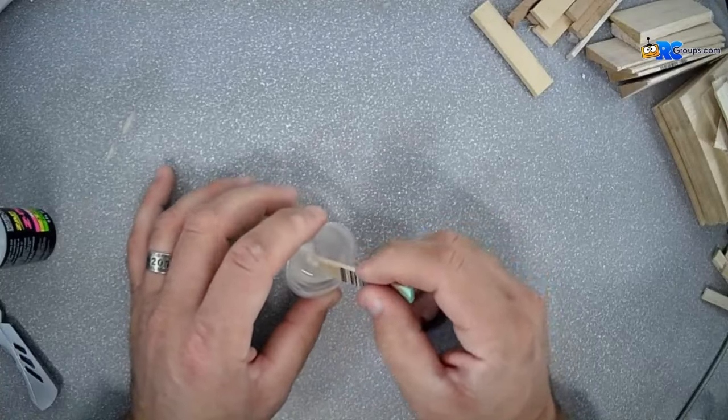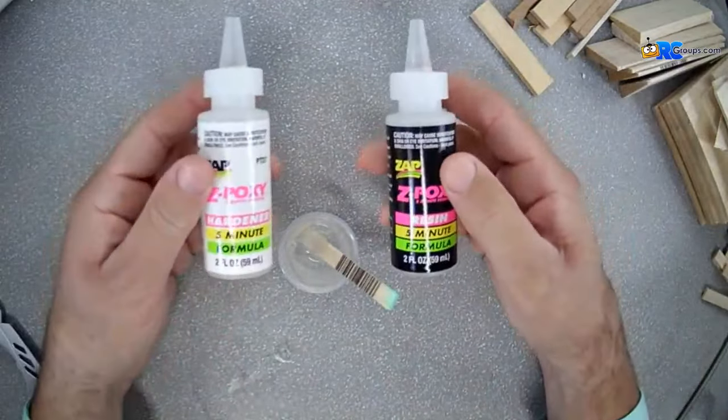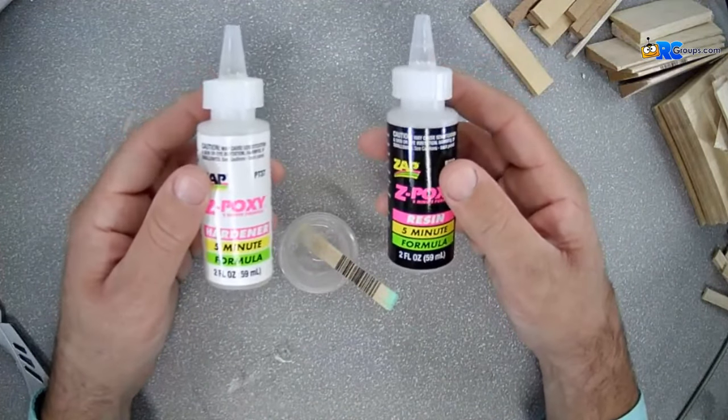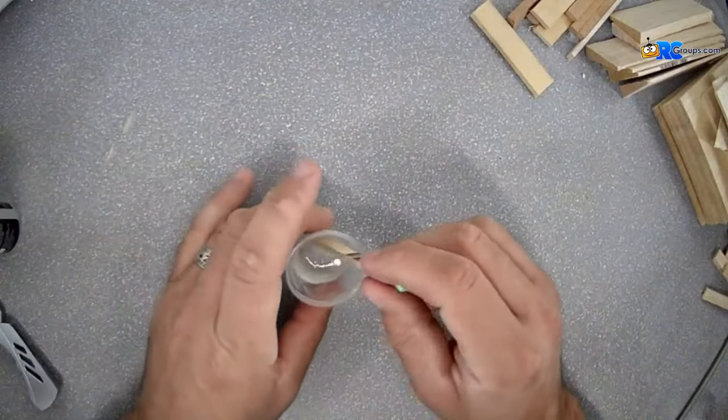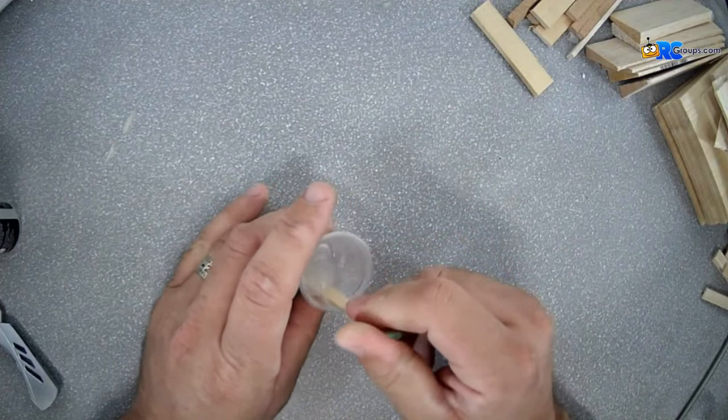Now, this is a five-minute set. So when we talk about five-minute epoxies, these are Z-poxies here. This is our set time. All of our Z-poxies for full cure, it's 24 hours. But it'll be hard within five minutes.